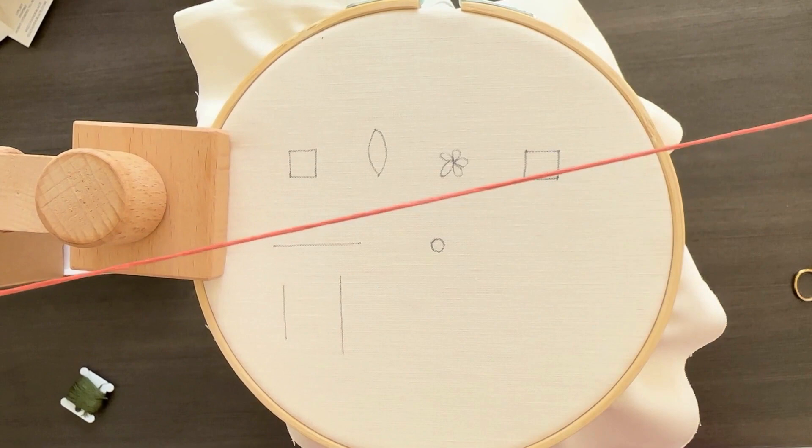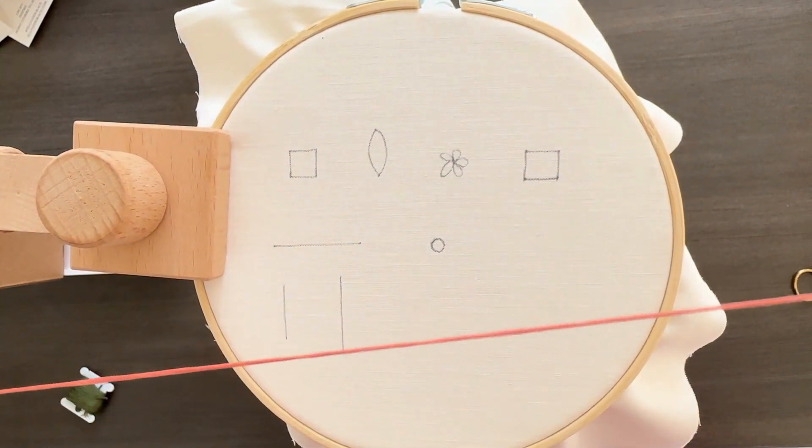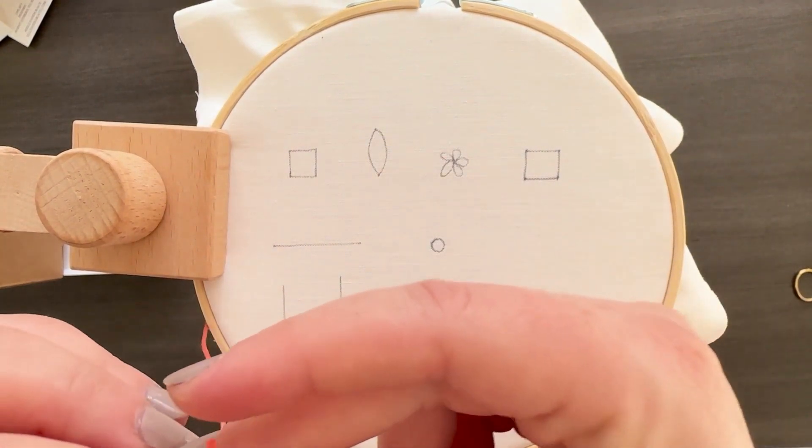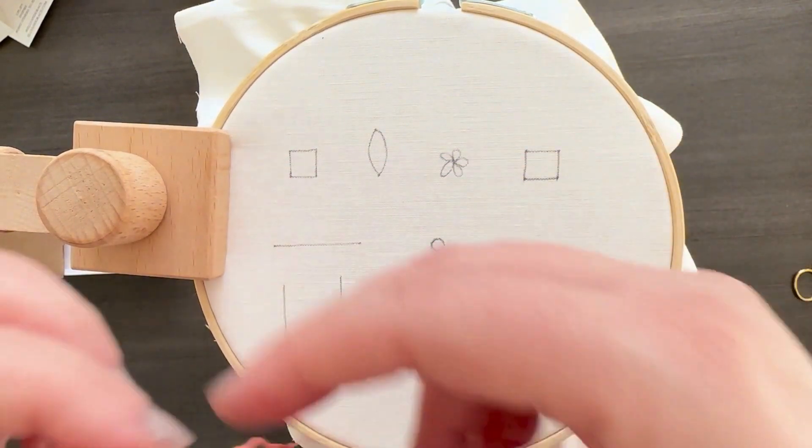So for the split backstitch, I've cut off a piece of thread. It is about arm's length, but you can make it a little bit longer, a little bit shorter, depending on how much you need. So it's about this long. Next I'm going to separate it.